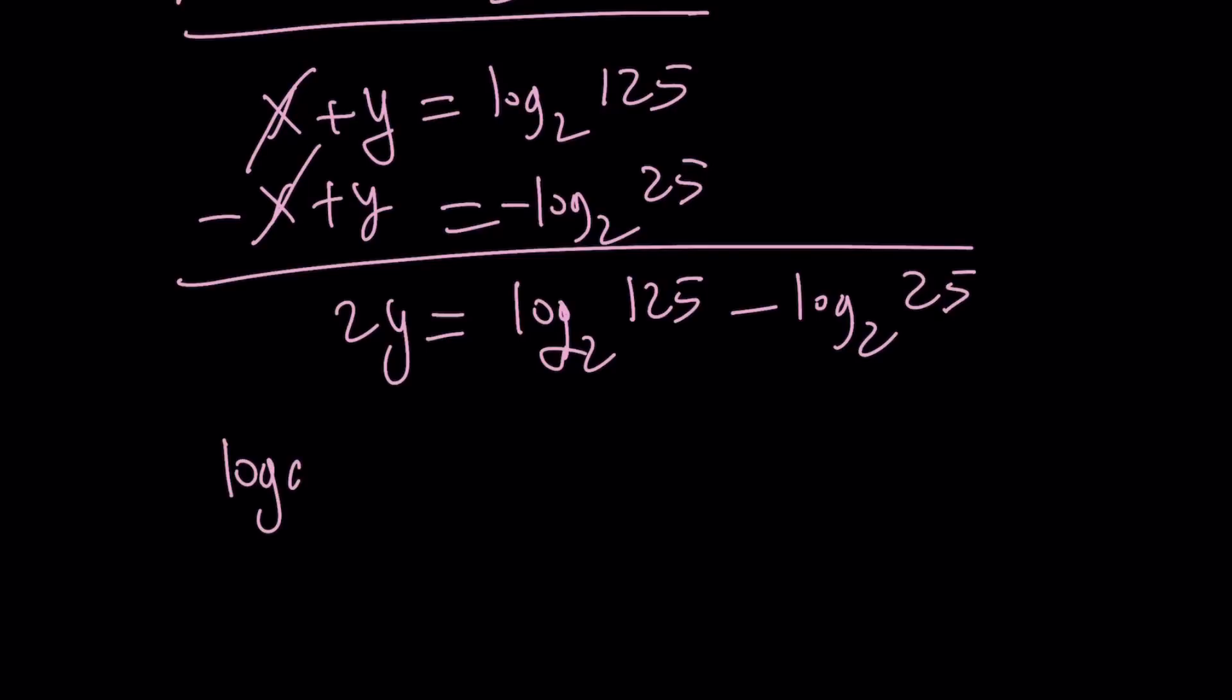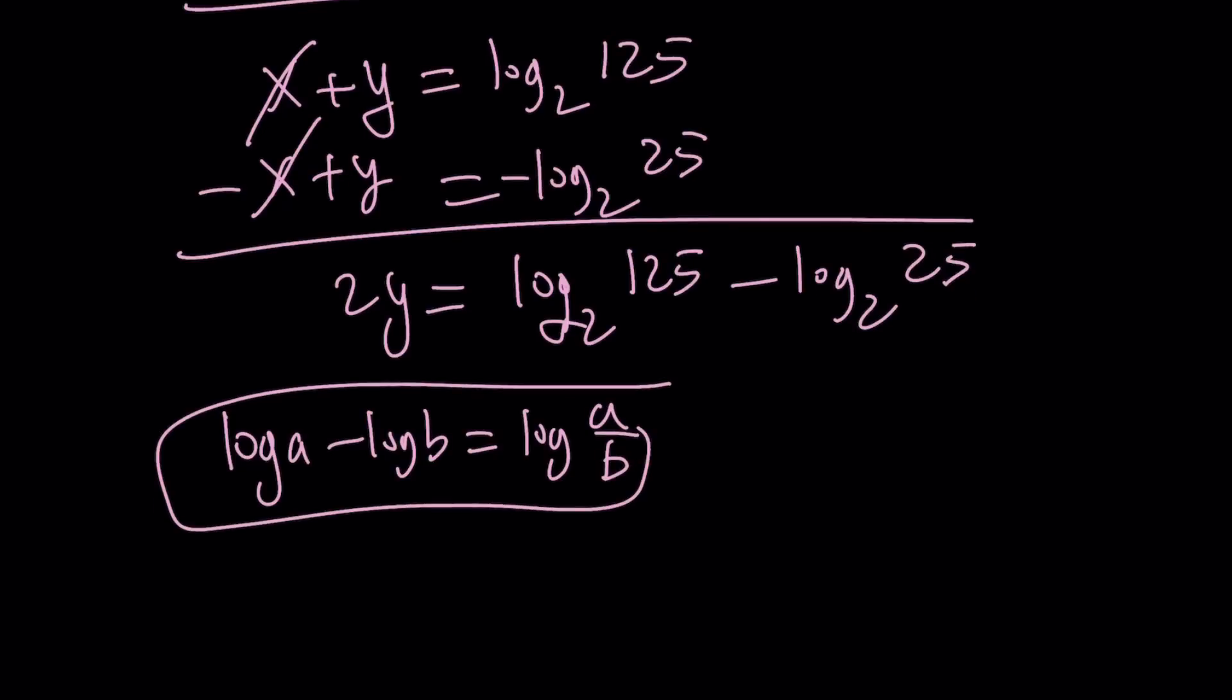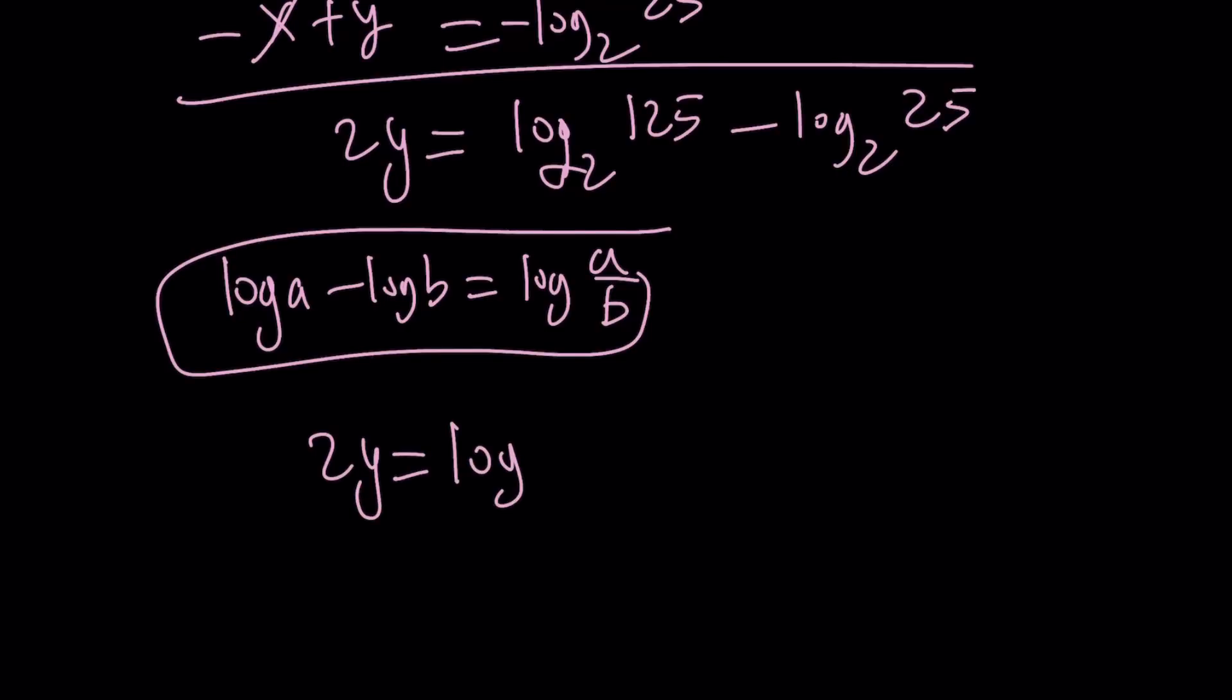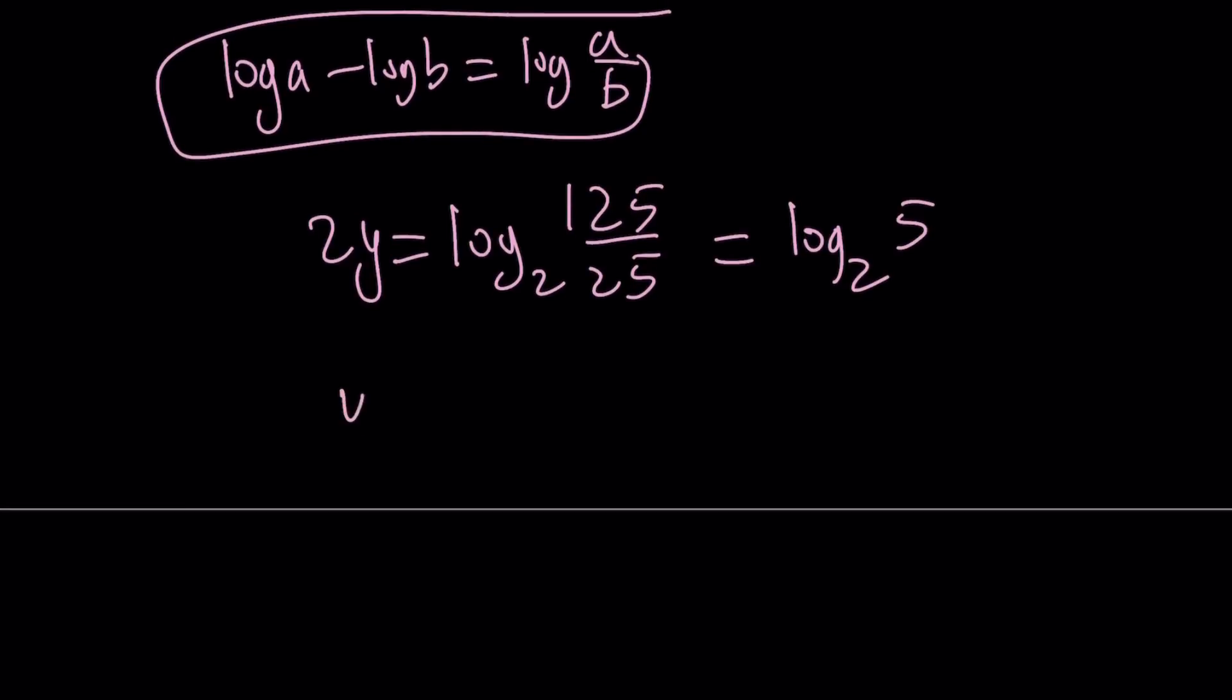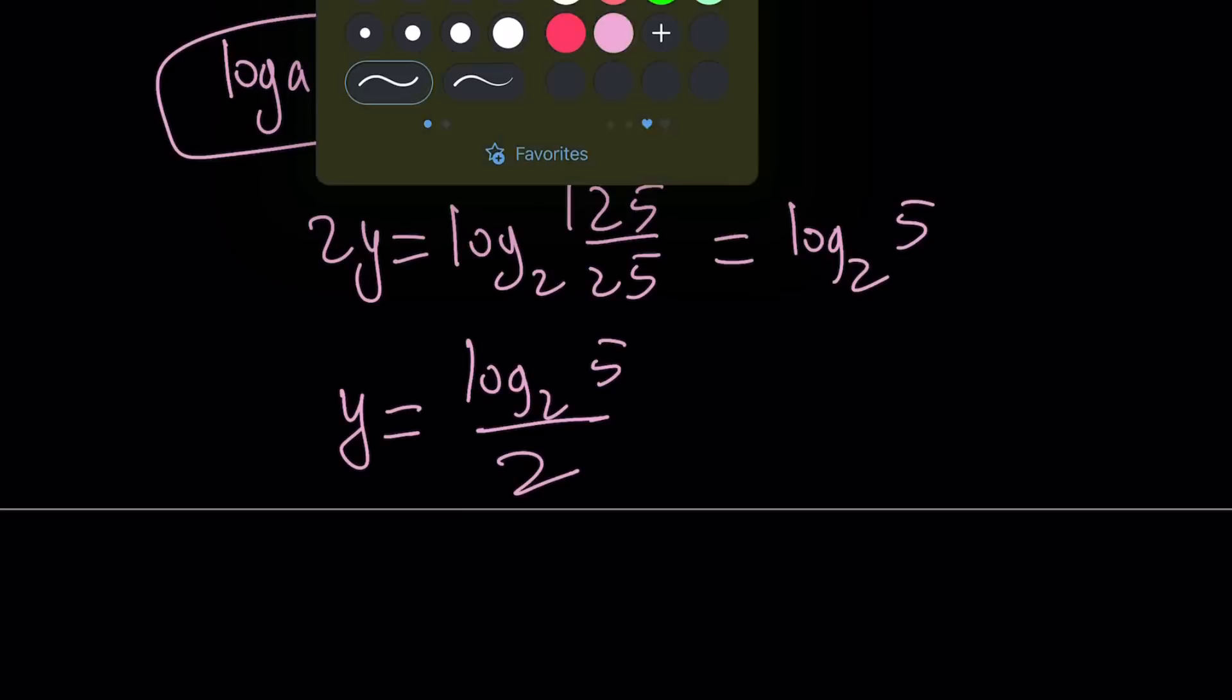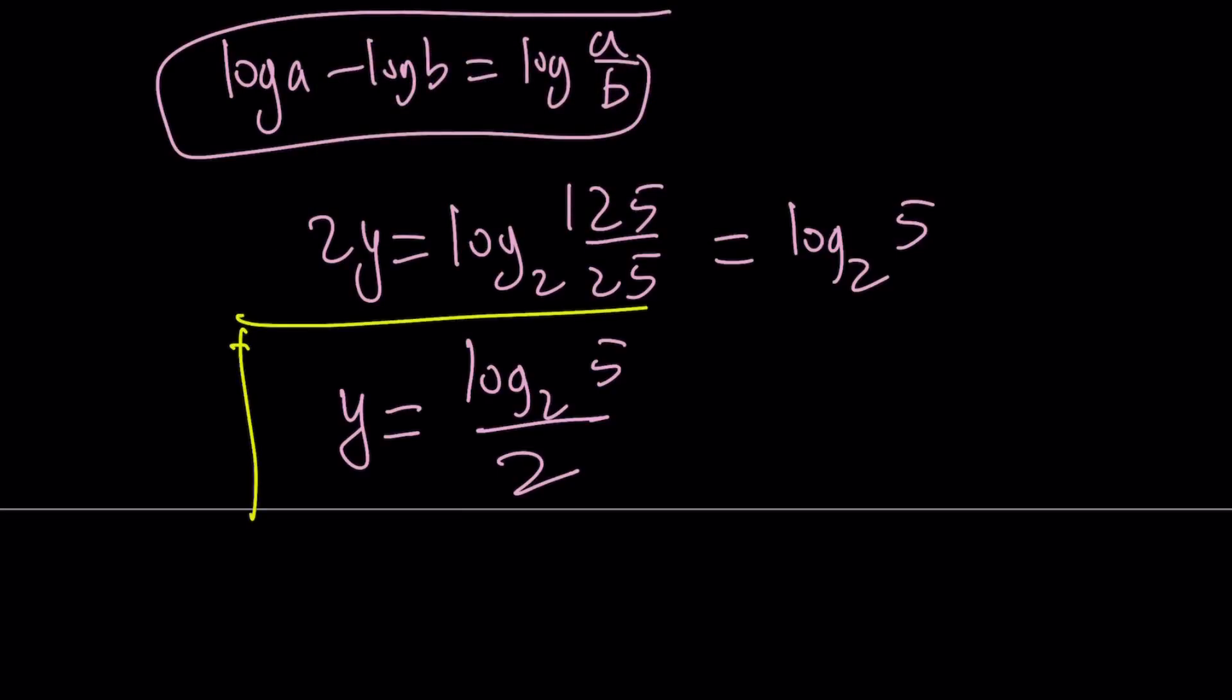We can condense using the quotient property. If you have log a minus log b, that can be written as log a over b, provided that a and b are both positive. Now 2y can be written as log 125 over 25, again base 2. But 125 divided by 25 is just 5. So we get log 5 with base 2. If you divide both sides by 2, you're going to get y equals log 5 divided by 2.